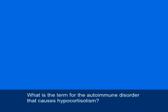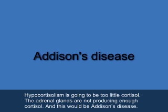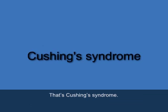What is the term for the autoimmune disorder that causes hypo-cortisolism? Hypo-cortisolism is too little cortisol — the adrenal glands are not producing enough cortisol — and this would be Addison's disease, capital A, D-D-I-S-O-N, apostrophe S, disease. And what is the term for the condition caused by excessive cortisol secretion? That's Cushing's Syndrome, capital C, U-S-H-I-N-G, apostrophe S, syndrome.